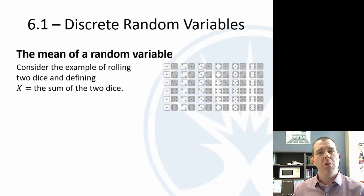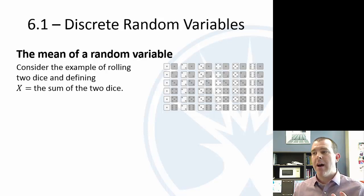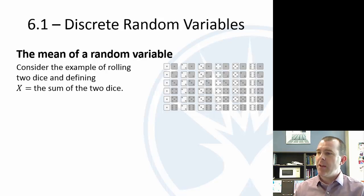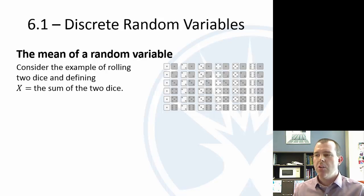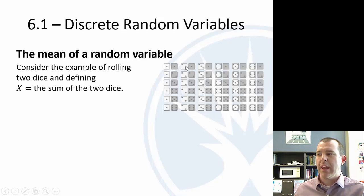The next question we want to ask is: how could I find the mean of a random variable? Here's a different example — suppose we're rolling two dice and looking at the sum. The possibilities range from 2 up to 12: I could have 2, 3 a couple of different ways, 4 three different ways, 5 four different ways, and so on.